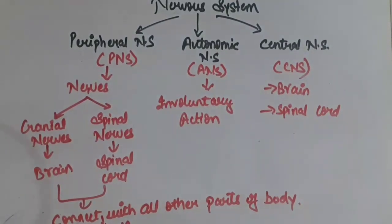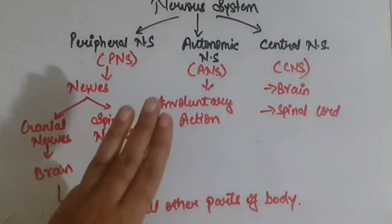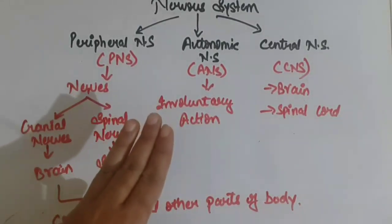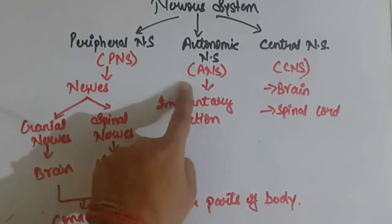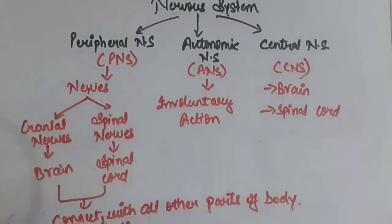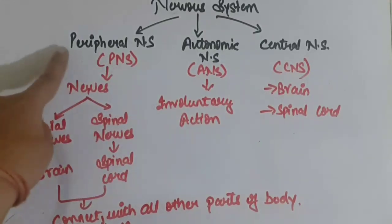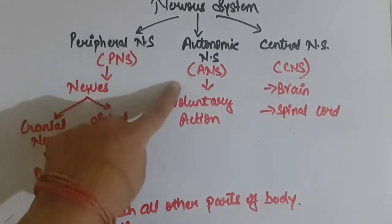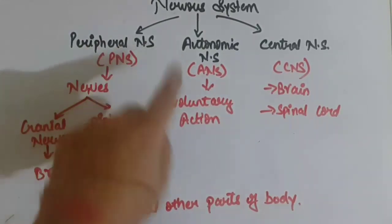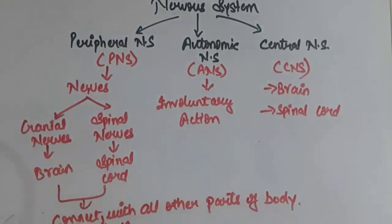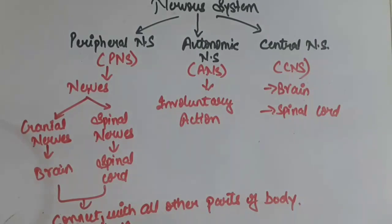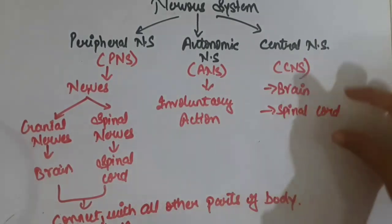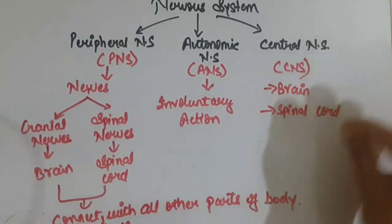If we talk about the different subtypes of nervous system, there are three major subtypes: PNS, ANS, and CNS. PNS is known as the peripheral nervous system, ANS is known as the autonomic nervous system, and CNS is known as the central nervous system.